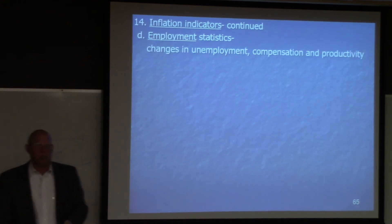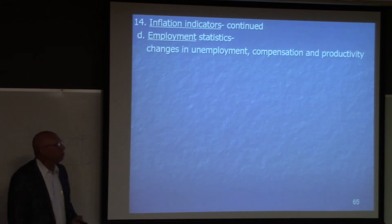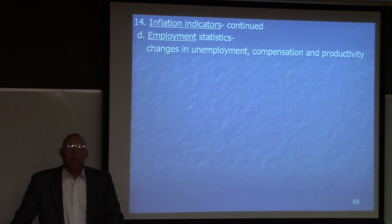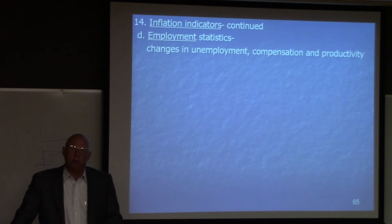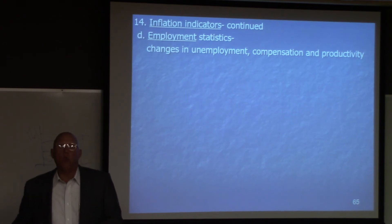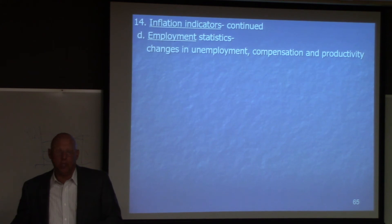Now let's look at employment statistics. We look at changes in unemployment, changes in compensation, and changes in productivity — all of which affect inflation. As unemployment drops — and unemployment is now around 3.7% — we're getting to the point where labor markets are getting tight and wages are rising, and that causes inflation. If productivity does not increase along with wages, then we will have cost-push inflation.